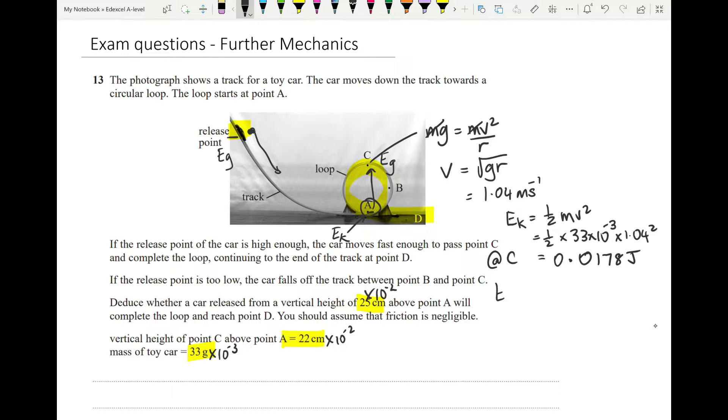Its kinetic energy at A has got to be that plus the GPE between the two. I'm going to calculate how much gravitational potential energy it took to get up between A and C. Our 33 times G times, and they tell us that the distance here is 22 centimeters. That gives us a GPE of 0.0712. We're going to add these two together, giving a total of 0.089 joules. That's how much kinetic energy the car must have at A in order to get up to C and still have enough speed to stay on the loop.